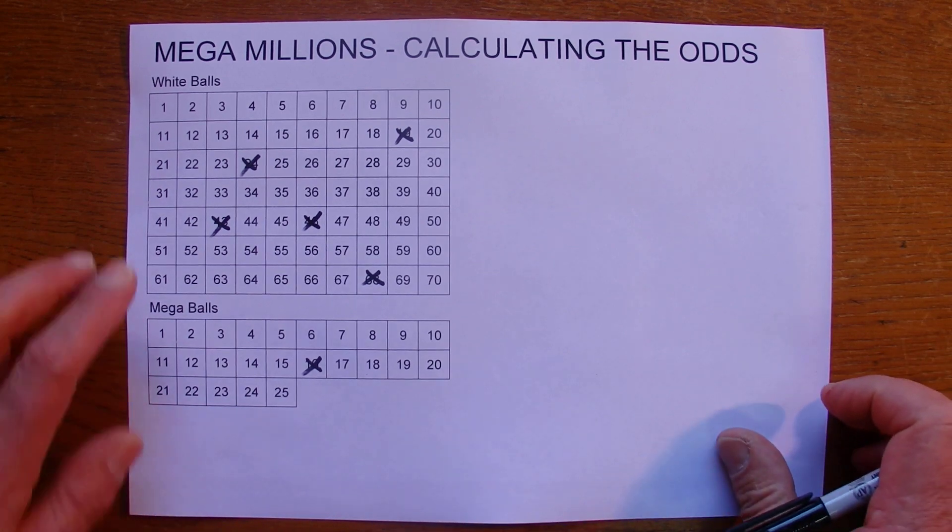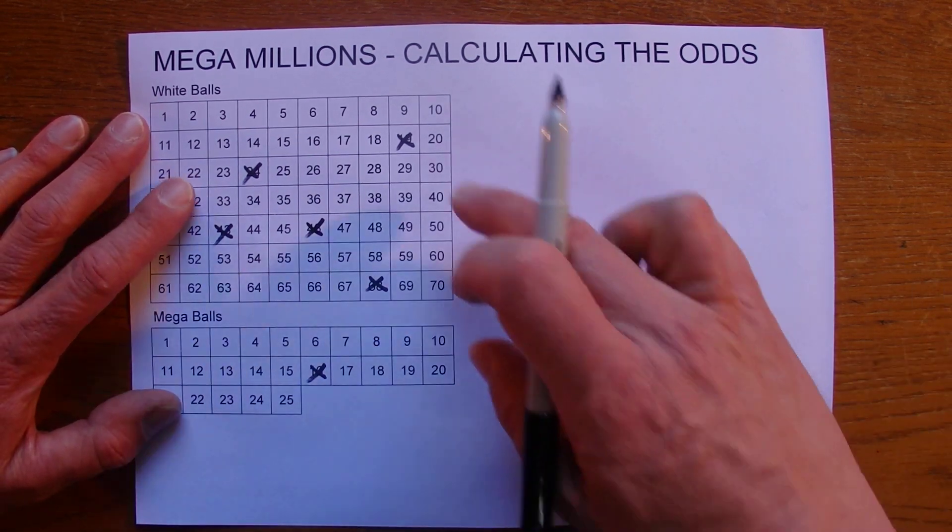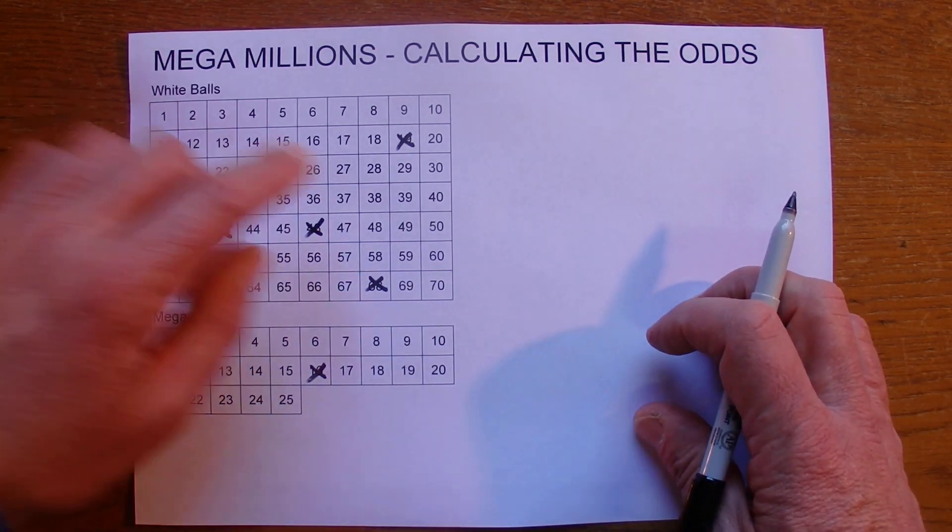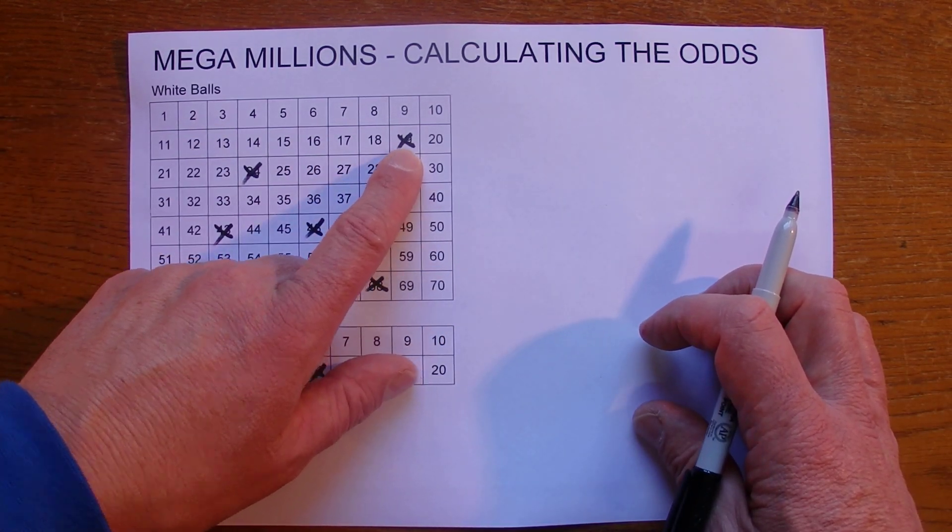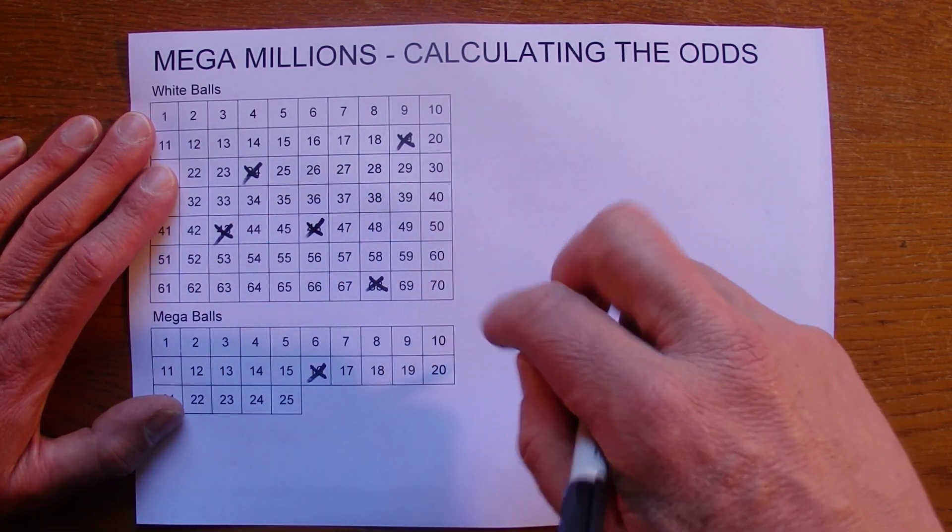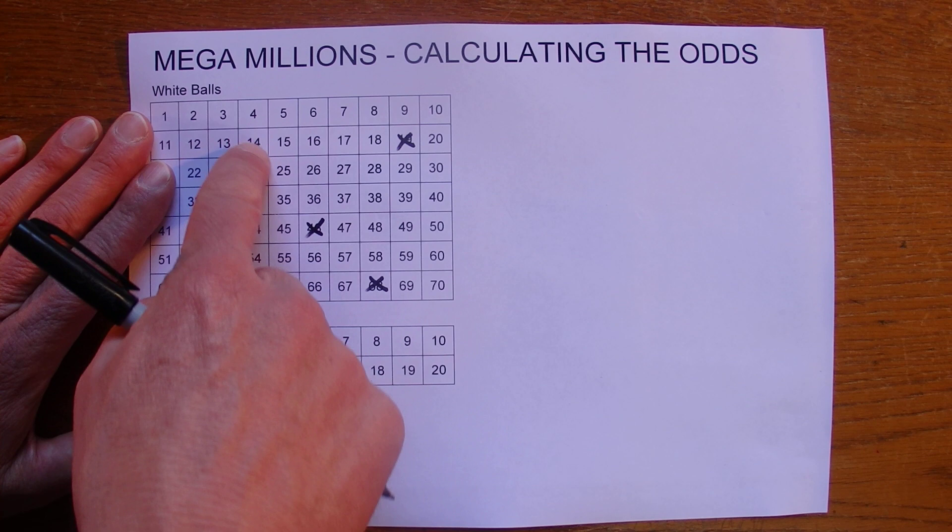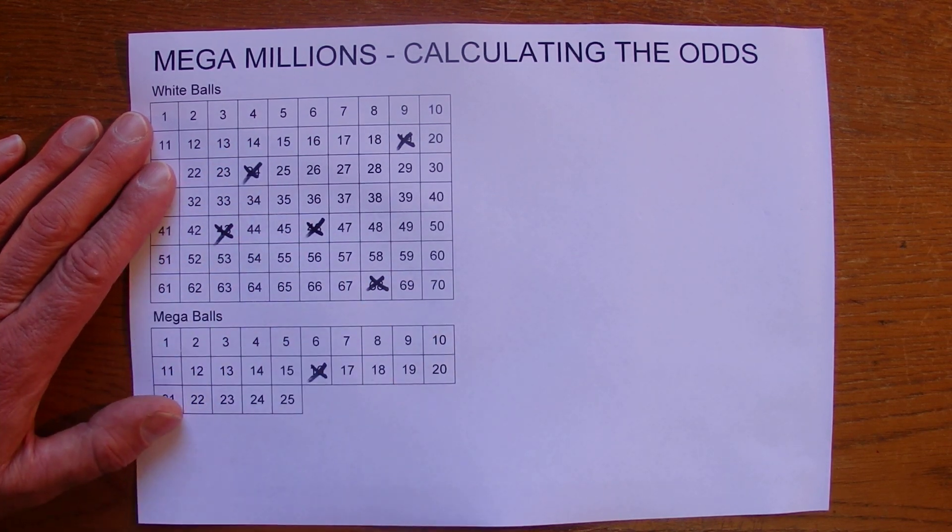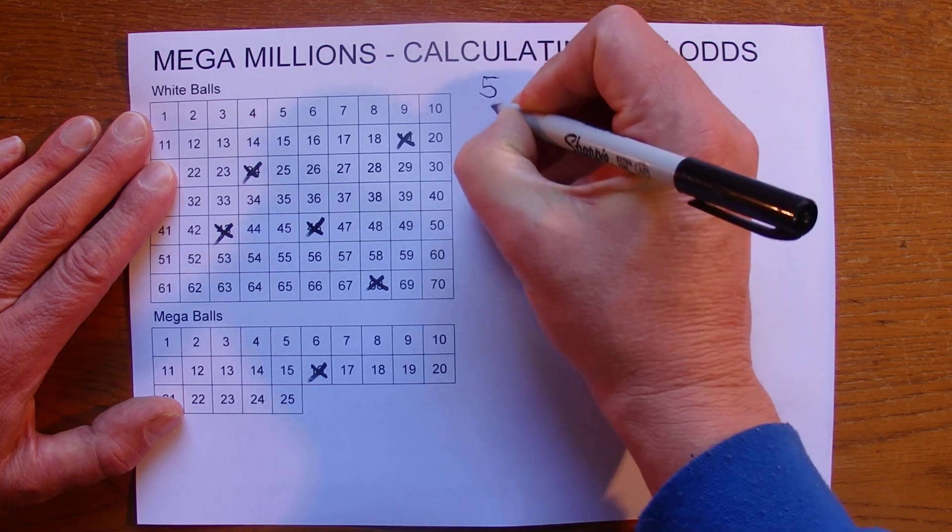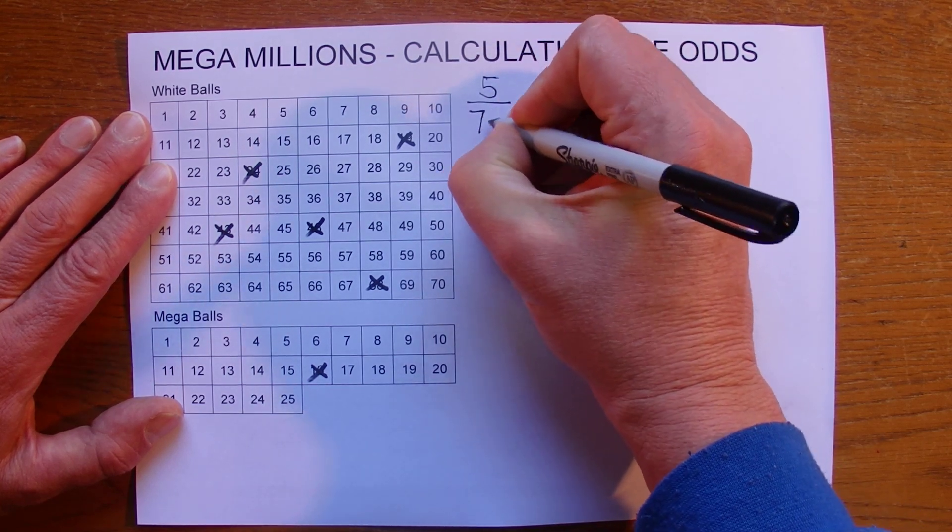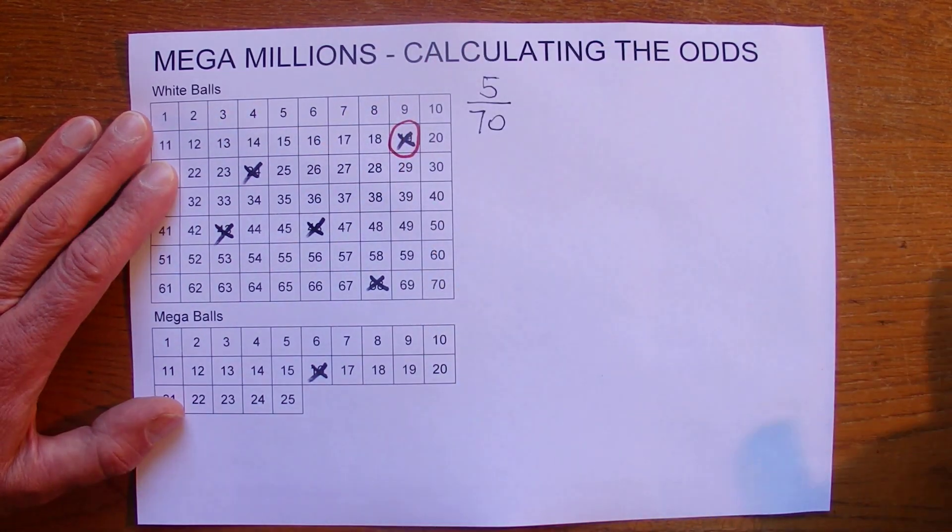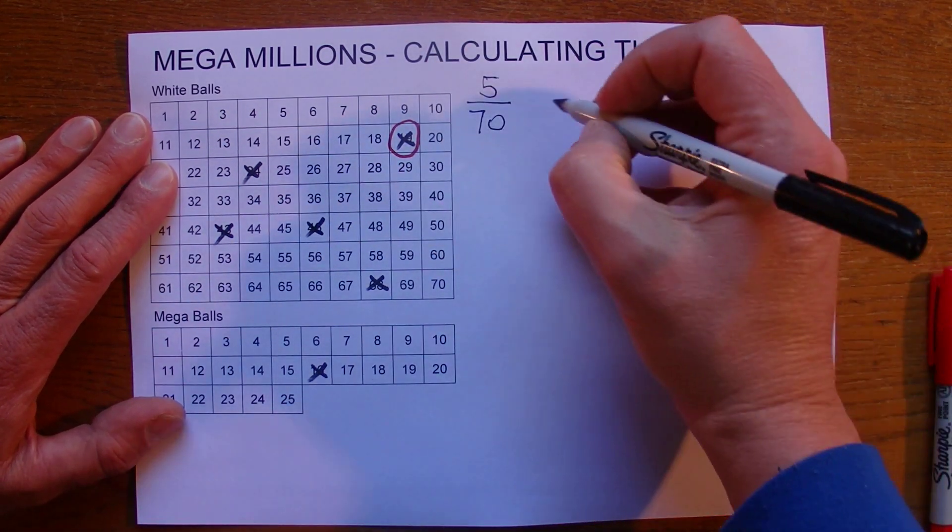And so you're watching the draw and then you've got five numbers in the top section and by chance you match the first number that comes out. And to match that first number you've got five chances in 70 because it doesn't matter what order they come out in. There's 70 balls in the barrel so you've got five chances in 70 of matching that first number.